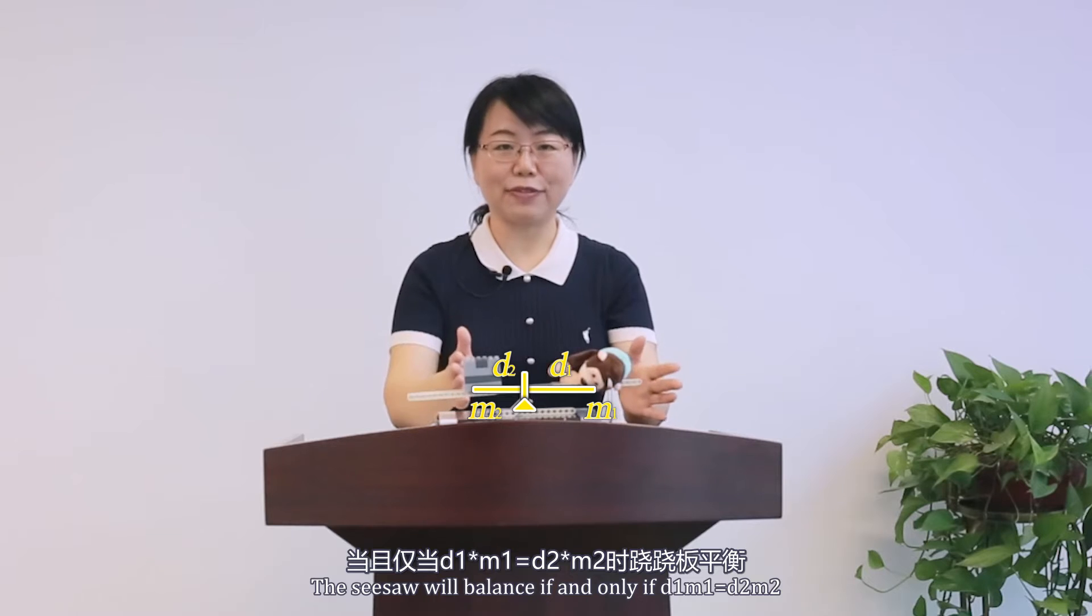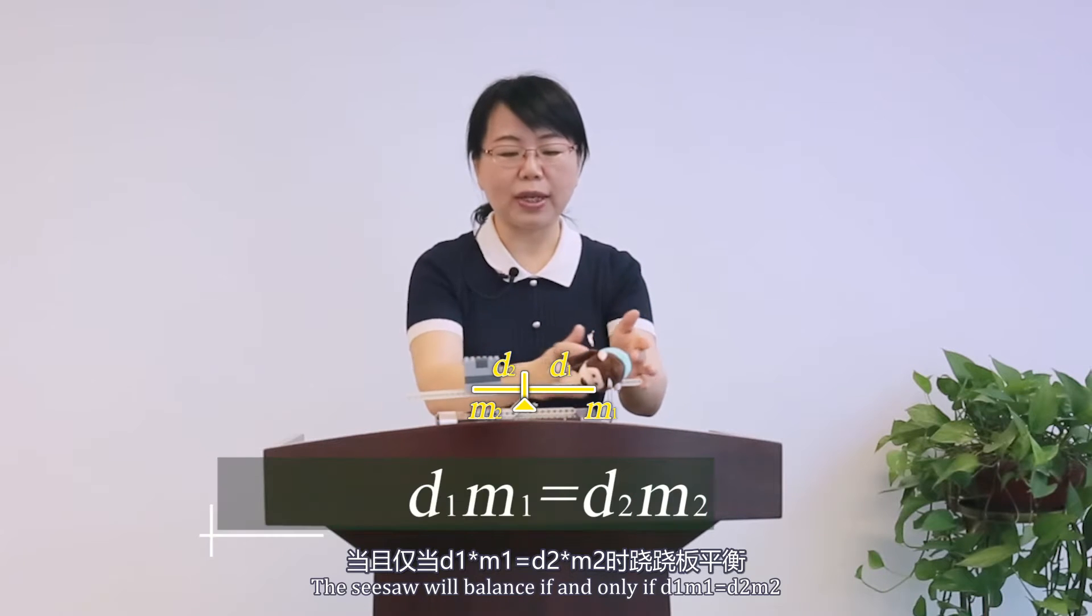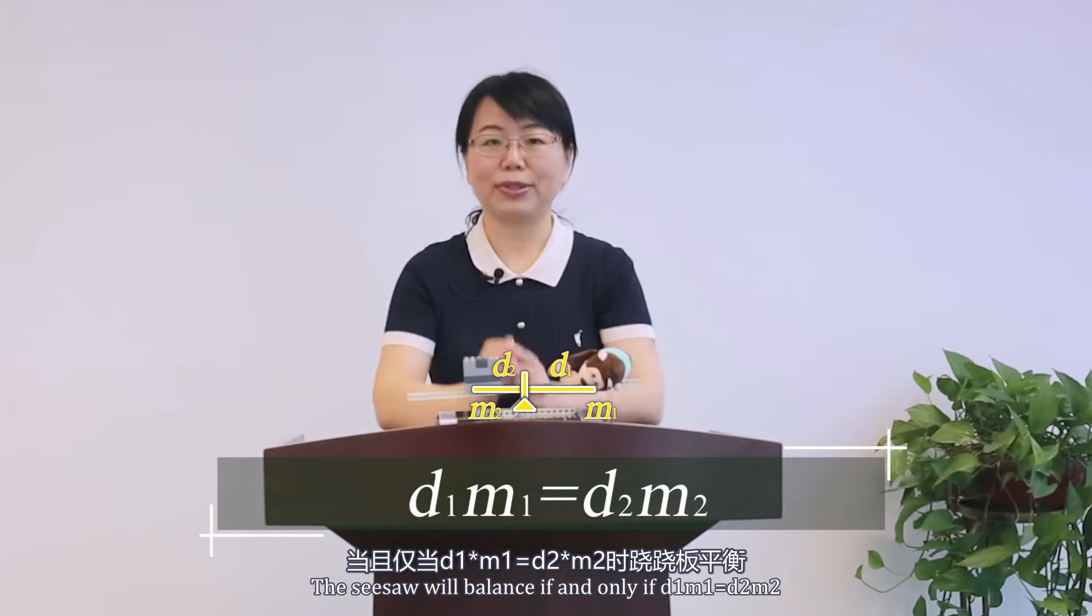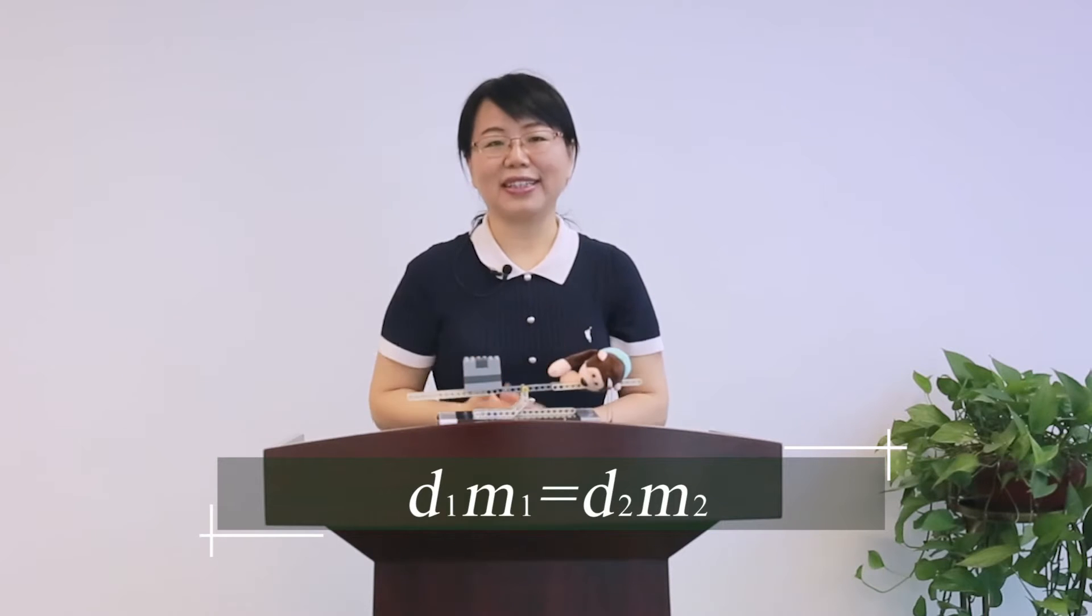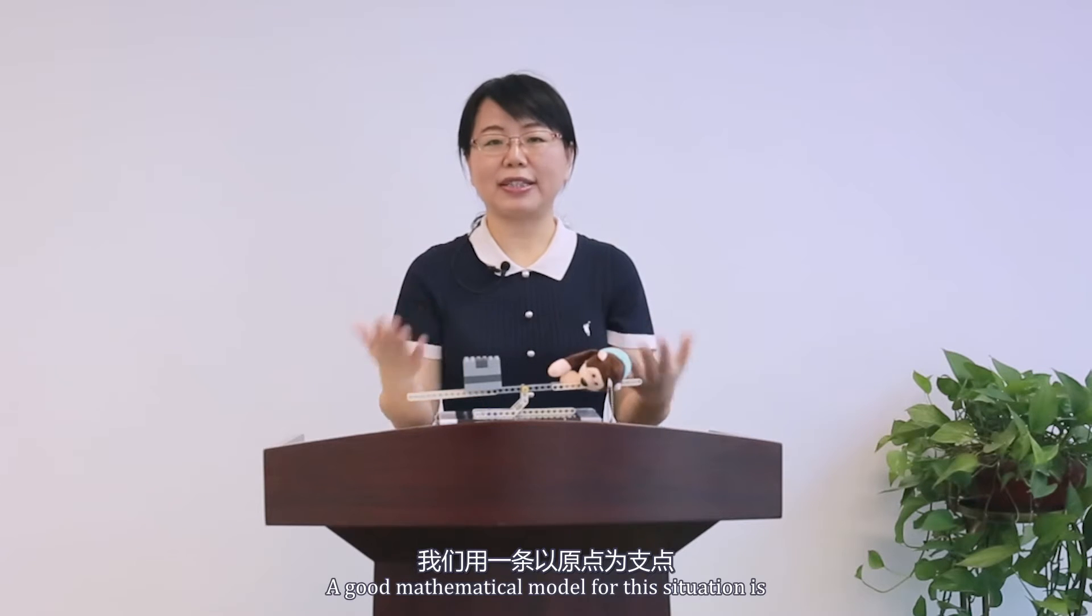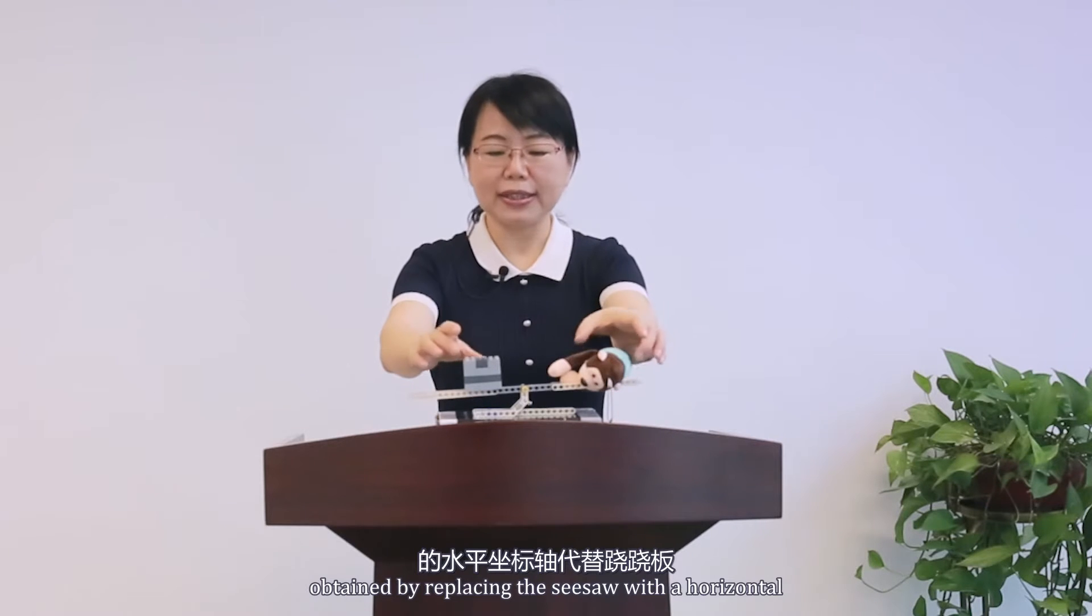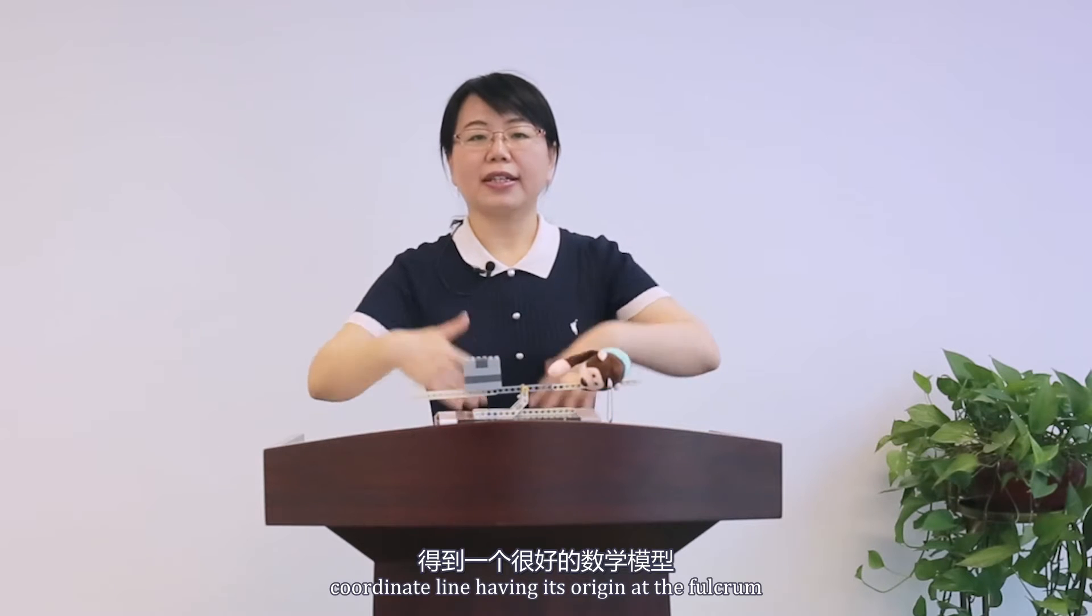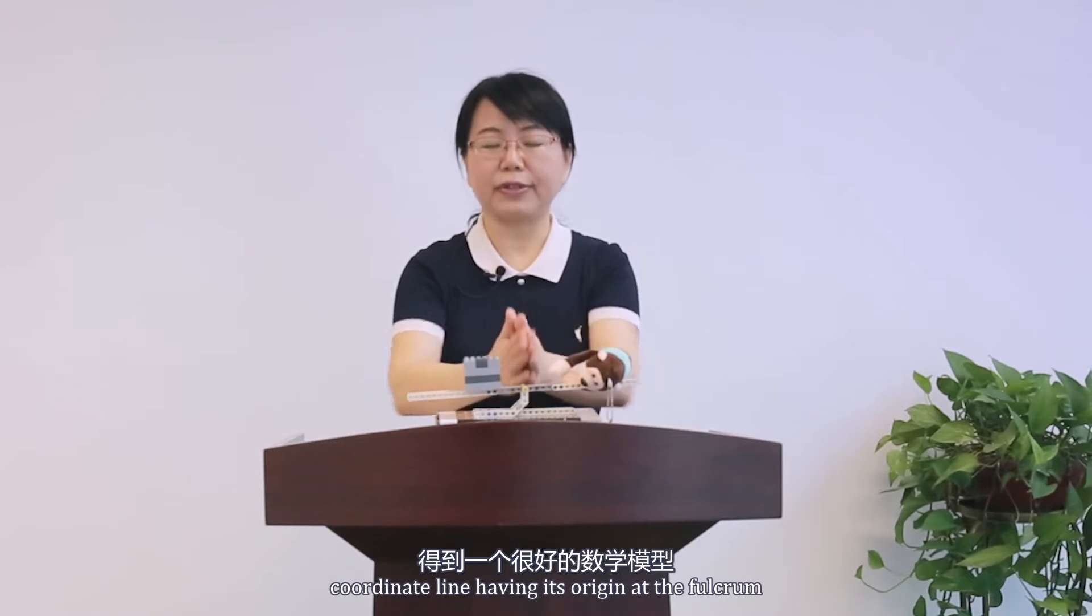The see-saw will balance if and only if D1 times M1 equals D2 times M2, just like this. A good mathematical model for this situation is obtained by replacing the see-saw with a horizontal coordinate line and having the origin at the fulcrum.